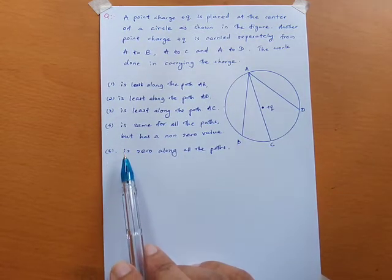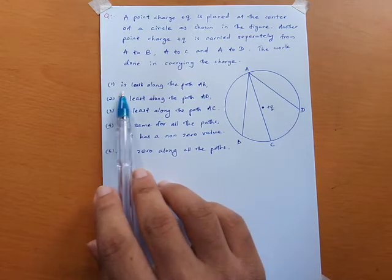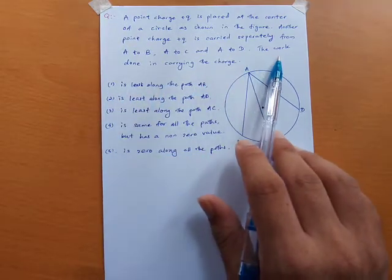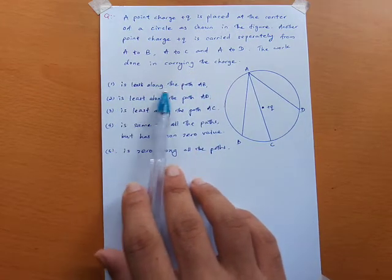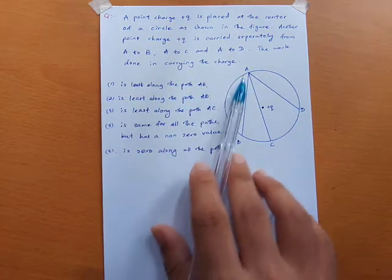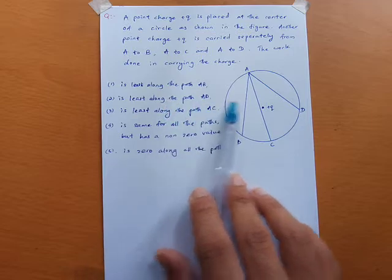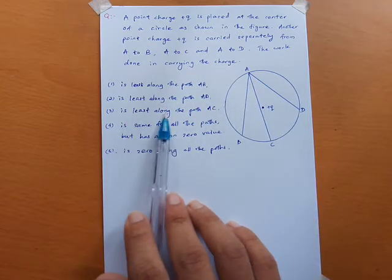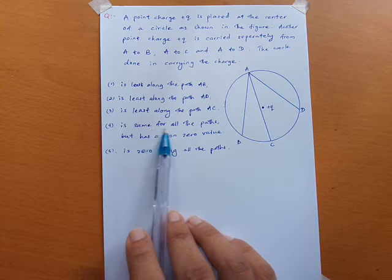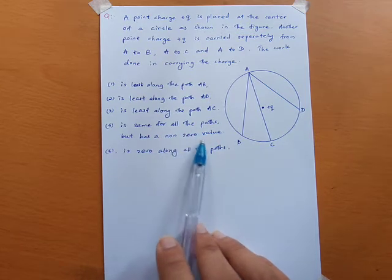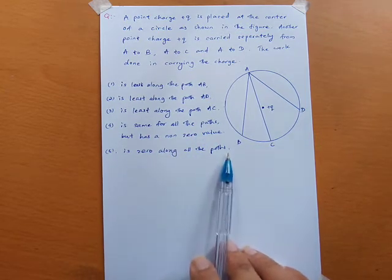We want to find which statement is correct. The options are: the work done is least along path AB; least along path AD; least along path AC; the same for all paths but non-zero; or zero along all paths.